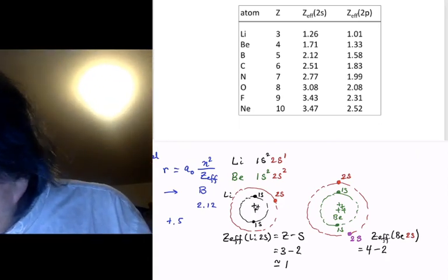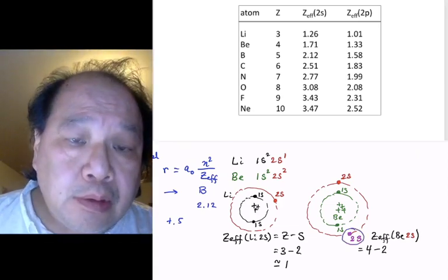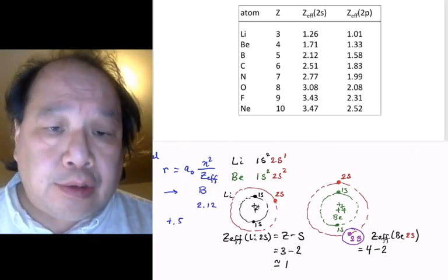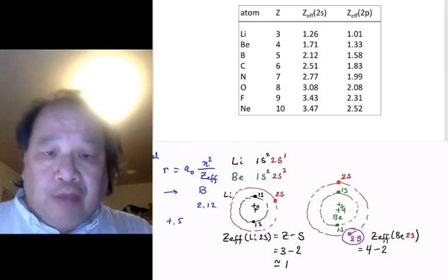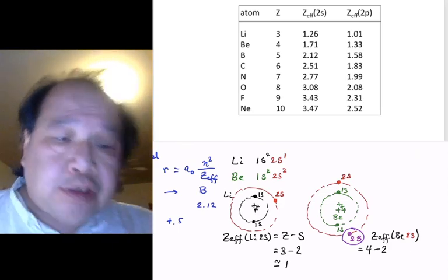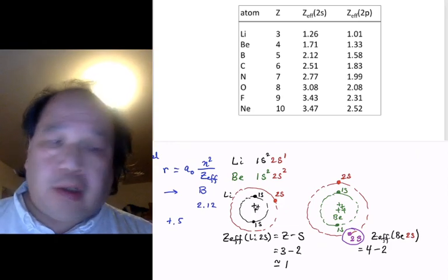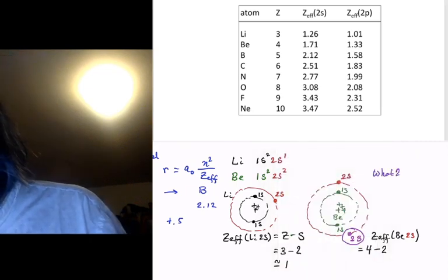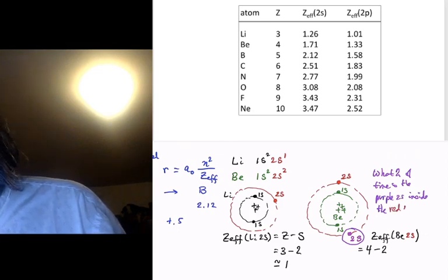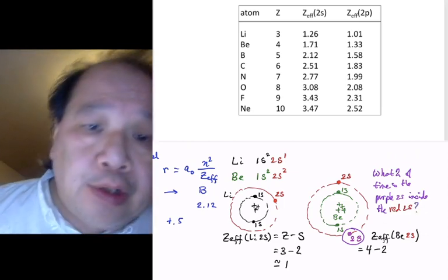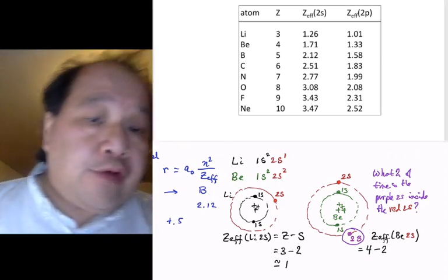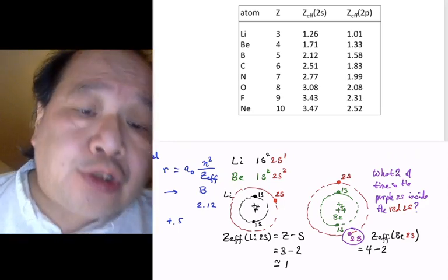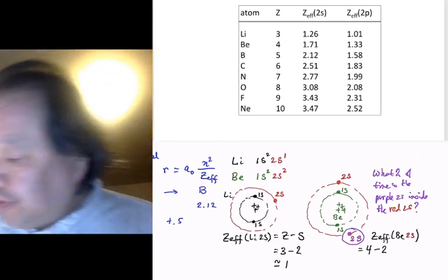The 2S electron that's in purple also could shield the 2S electron. Remember Gauss's law: for spherical distributions, if the charge is inside and spherically symmetric, it's as if it's at the nucleus. If it's outside, it has no effect on the forces at all. So we need to figure out what percent of the time is the purple 2S inside the red 2S. That is the question. Why don't you think about it? We have two 2S electrons. They're basically very similar, and what percent of the time is one of them closer to the nucleus than the other? Remember they're in the same orbital, 2S. Put in chat if you can figure out an answer.